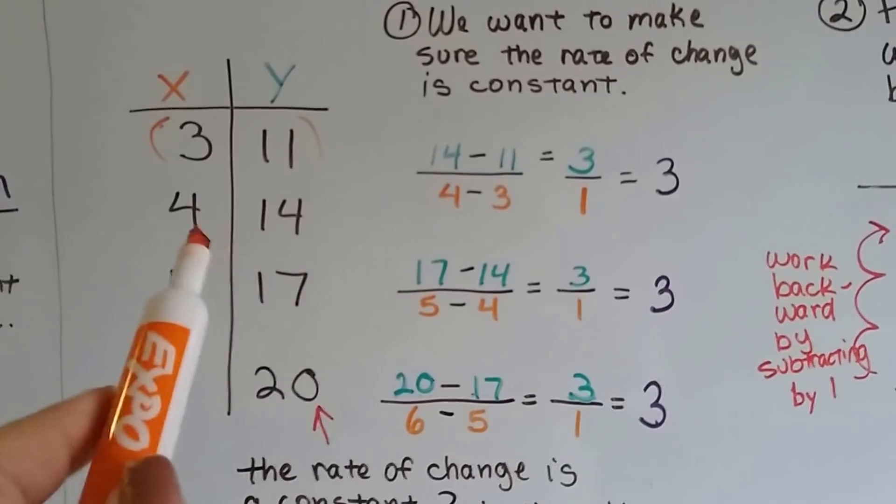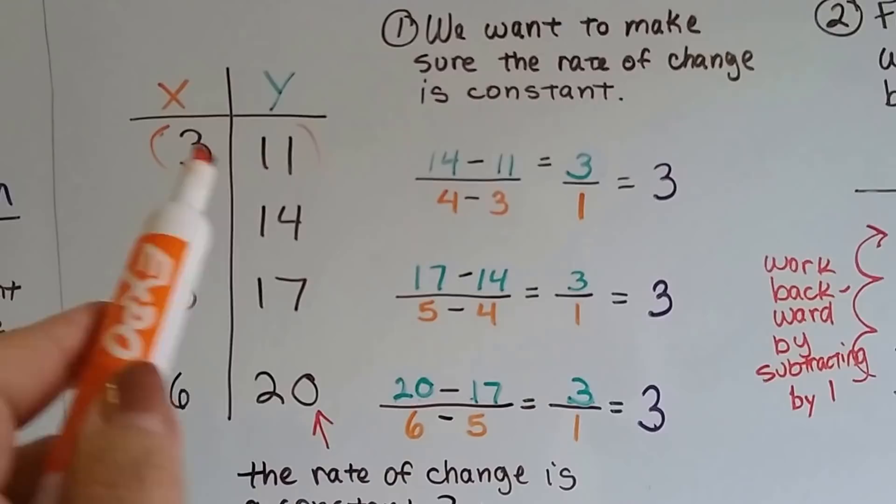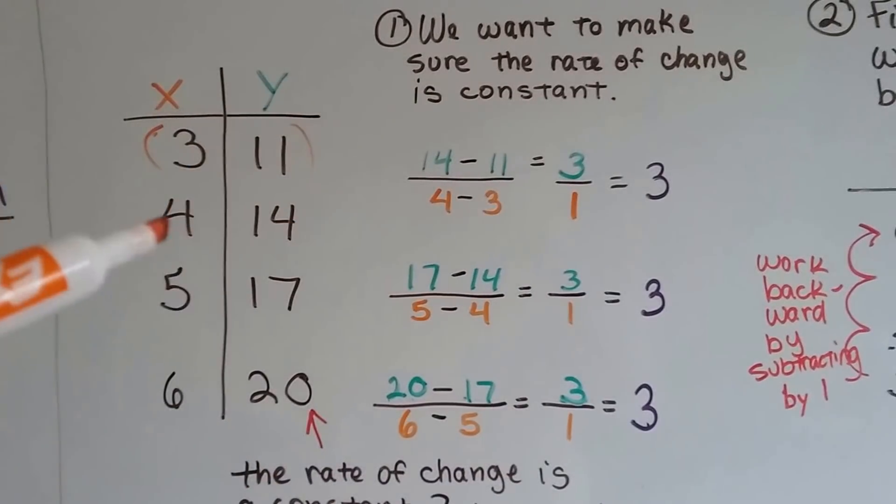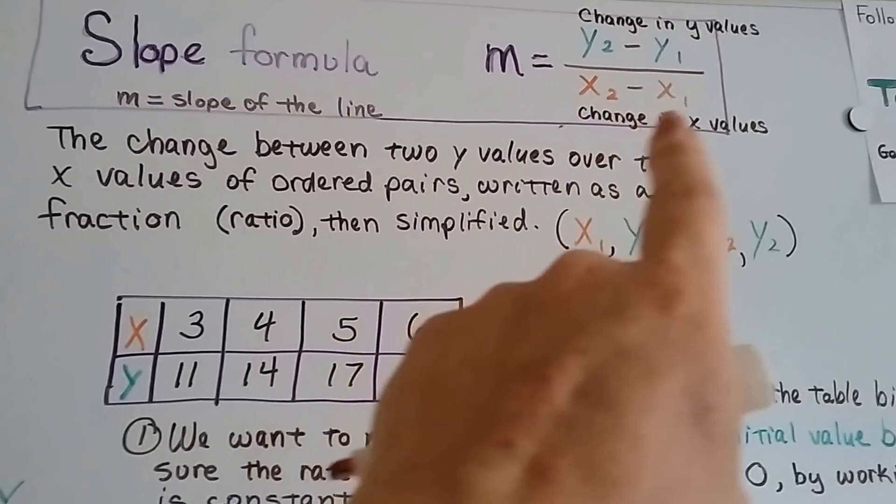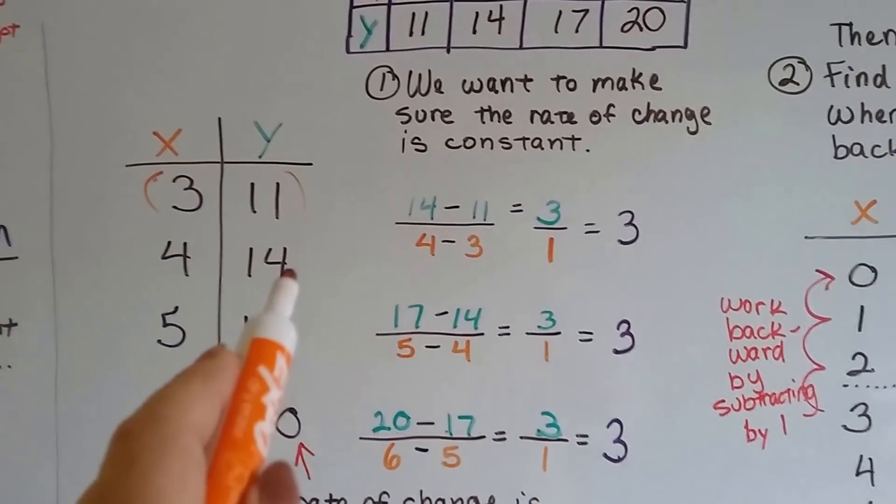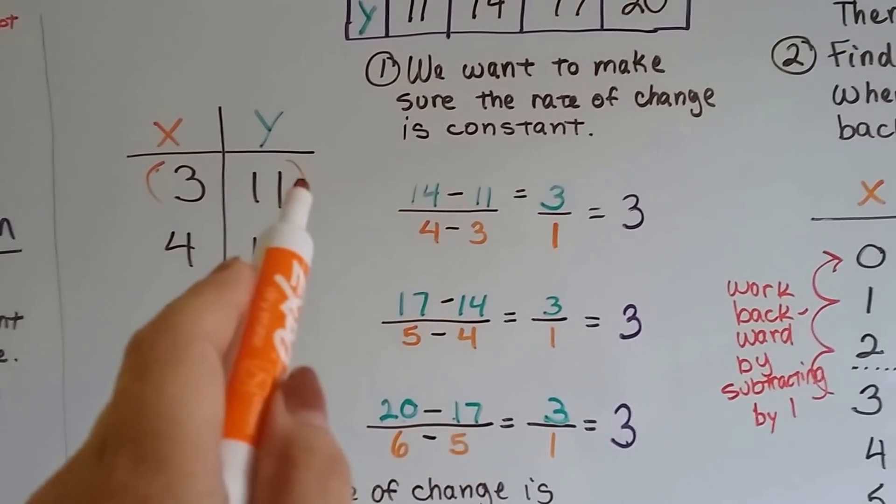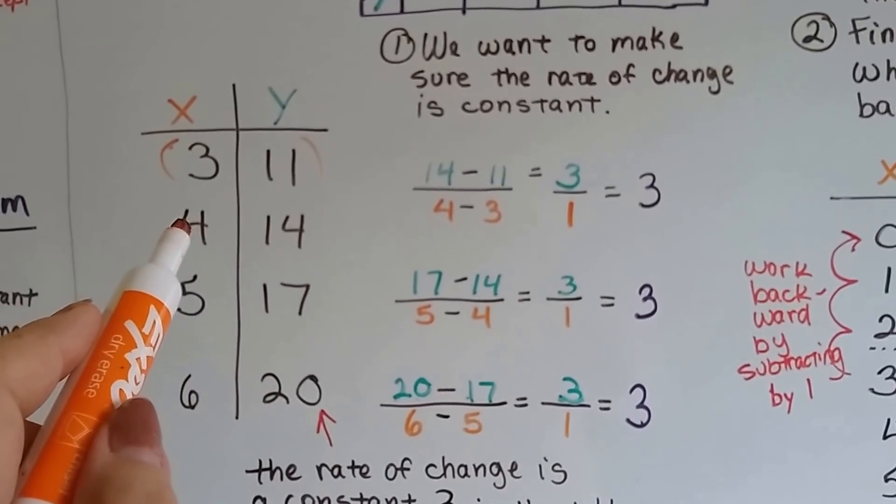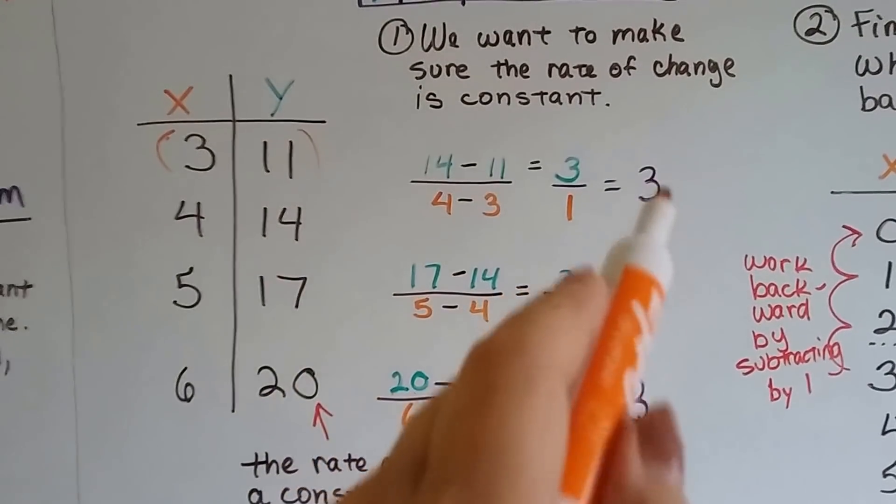So what I did was I compared the x4 and the y14 to the x3 and the y11. That would be y2 and y1 and x2 and x1, just like the slope formula. y2 and y1 over x2 and x1. So the second y, y2 is 14 and we're going to take away the first one, that's 11. So we get a 3. Then we take the second x, x2 and take away x1. 4 minus 3 is 1. We get a 3.